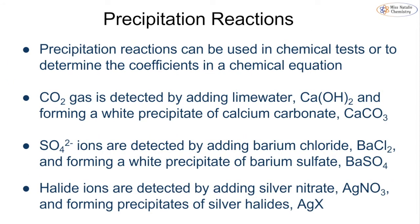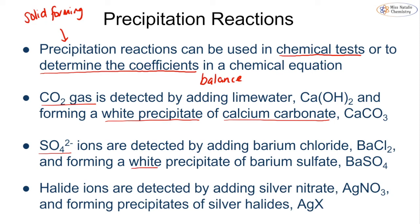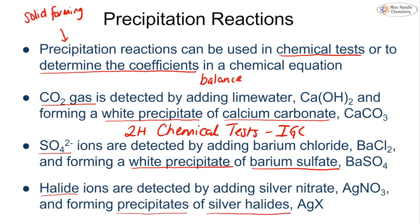A precipitation reaction - you've covered this in IGCSE. This is where we get a solid forming. We can use them in chemical tests, or we can use them to determine the coefficient in a chemical equation, or in other words, to balance a chemical equation. Chemical tests we can use precipitation reactions for are to test for CO2 because we get the white precipitate of calcium carbonate in the lime water. We can use it for sulfate ions because we get a white precipitate of barium sulfate. And we can use it for halide ions because we get a precipitate of either white, cream or yellow of our silver halides. If you can't remember that, you might want to look back at topic 2H chemical tests from IGCSE.